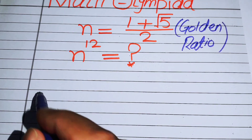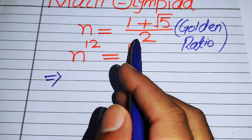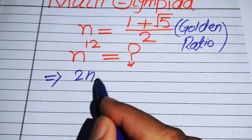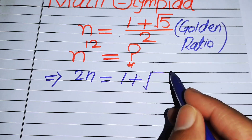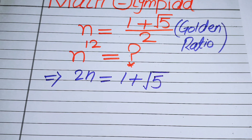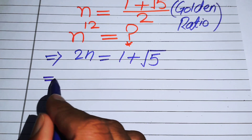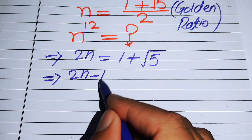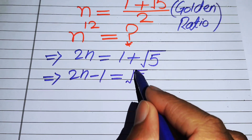To find n to the power of 12, first we simplify the golden ratio expression. Moving terms to the right-hand side, we write 2n equals 1 plus √5. Then we move the plus 1 to the left-hand side.